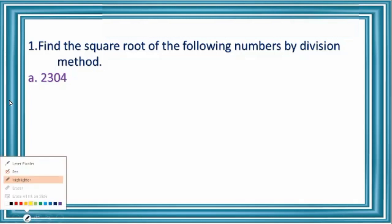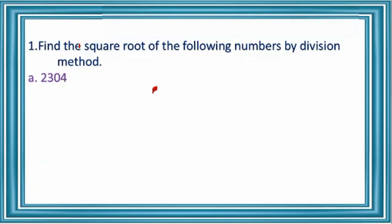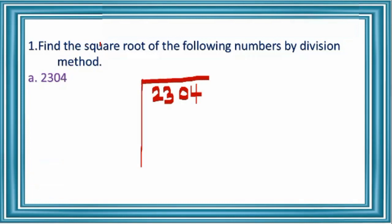First you have to write the number 2304. After that, draw a line like this. Then group the numbers. Start from the ones place: 0 and 4 in one group, then 2 and 3 in the next group. Then after that, take the first two digits, that is 23.